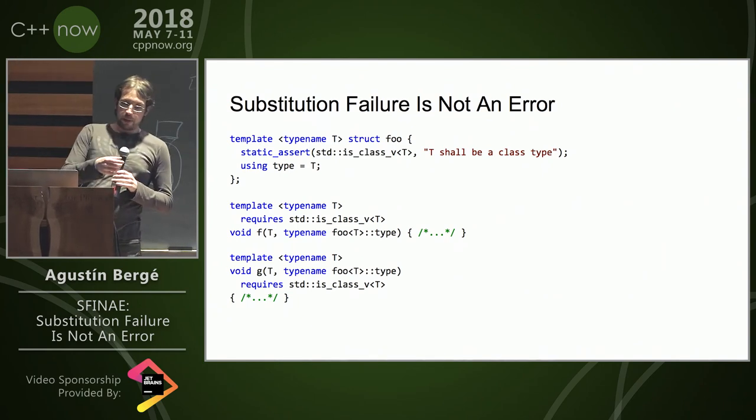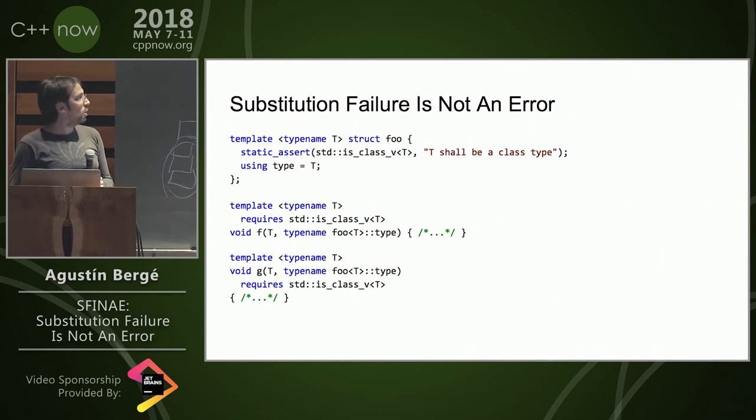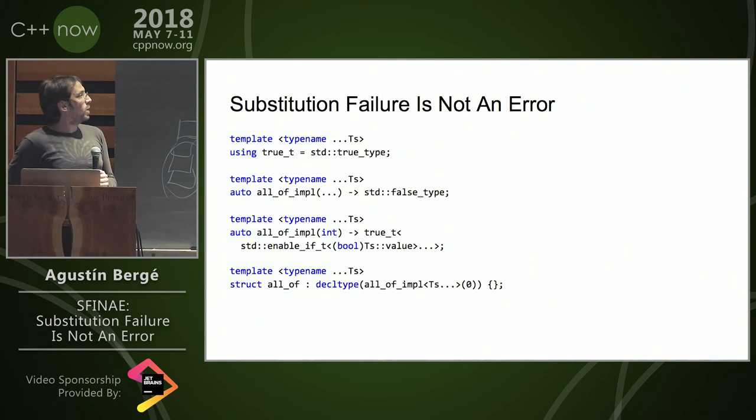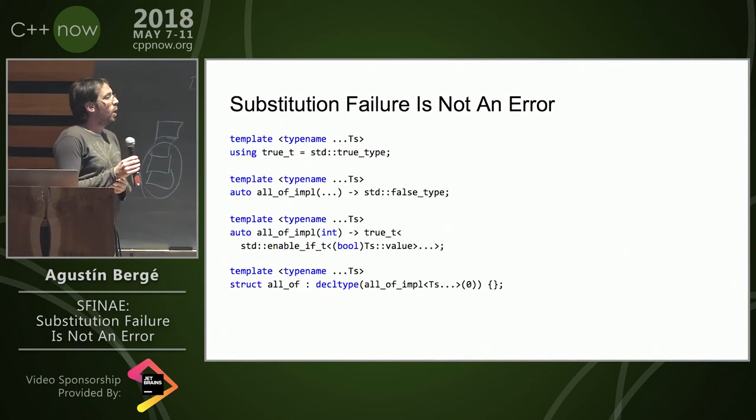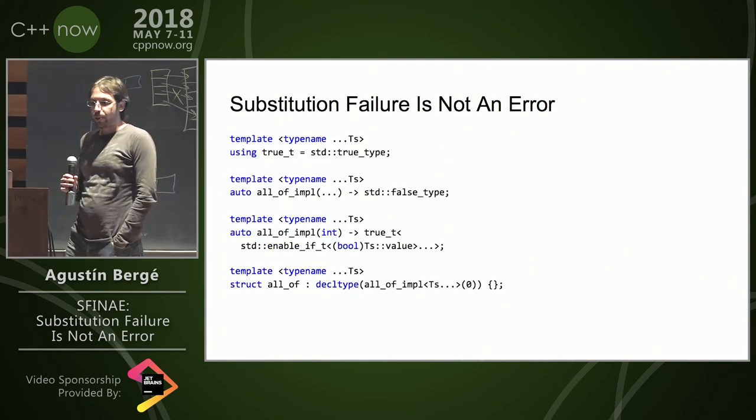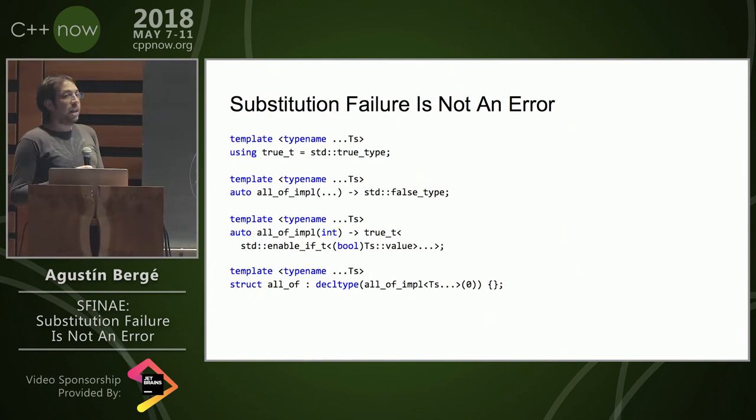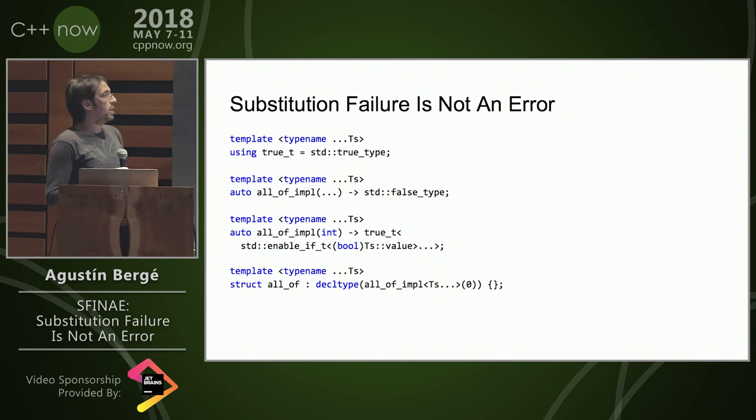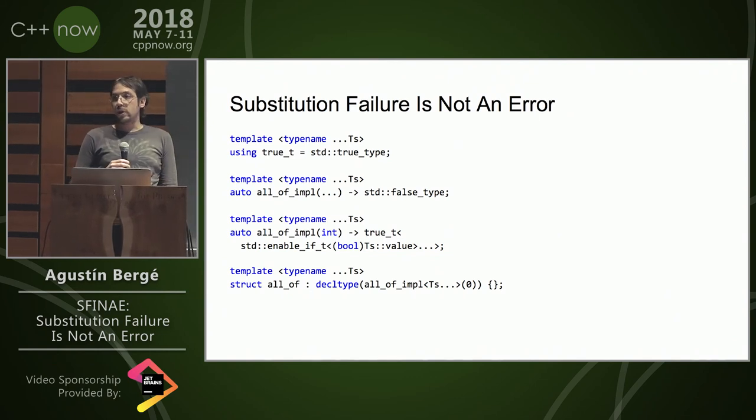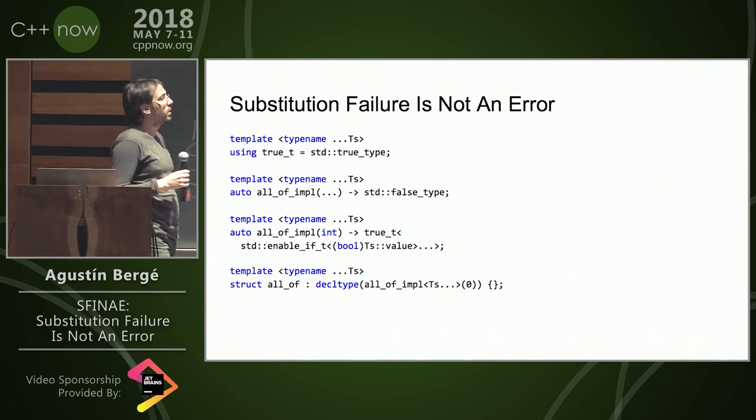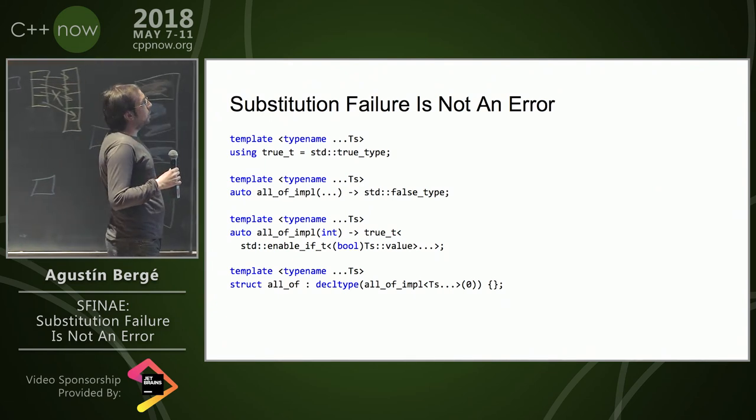What's the time? Okay. So I have one minute, so I'm going to show this one. This is an implementation that I first saw in Lib C++ by Eric Fiselier. And it's a lazy short-circuiting implementation of a conjunction trait. It's an all-of.